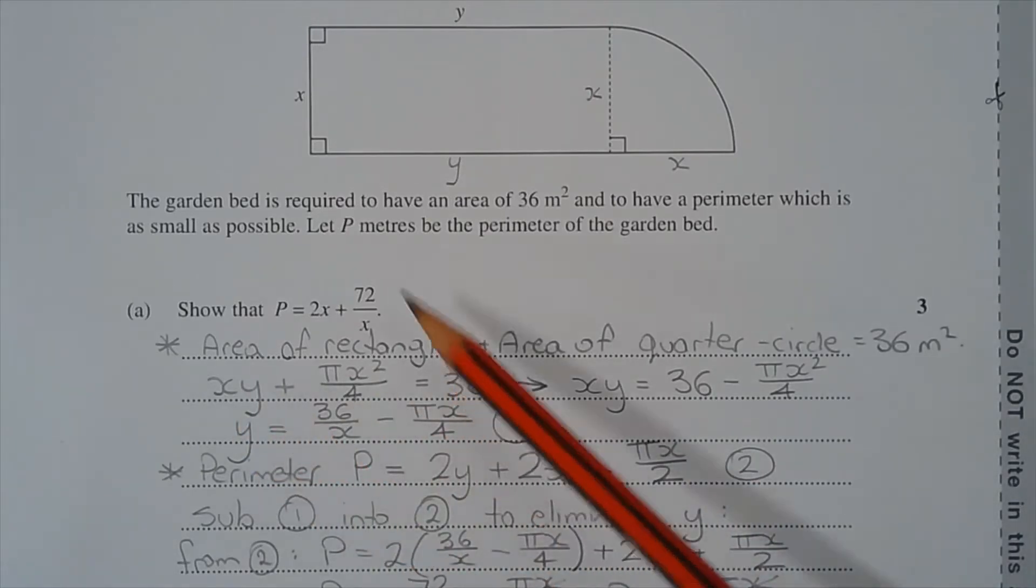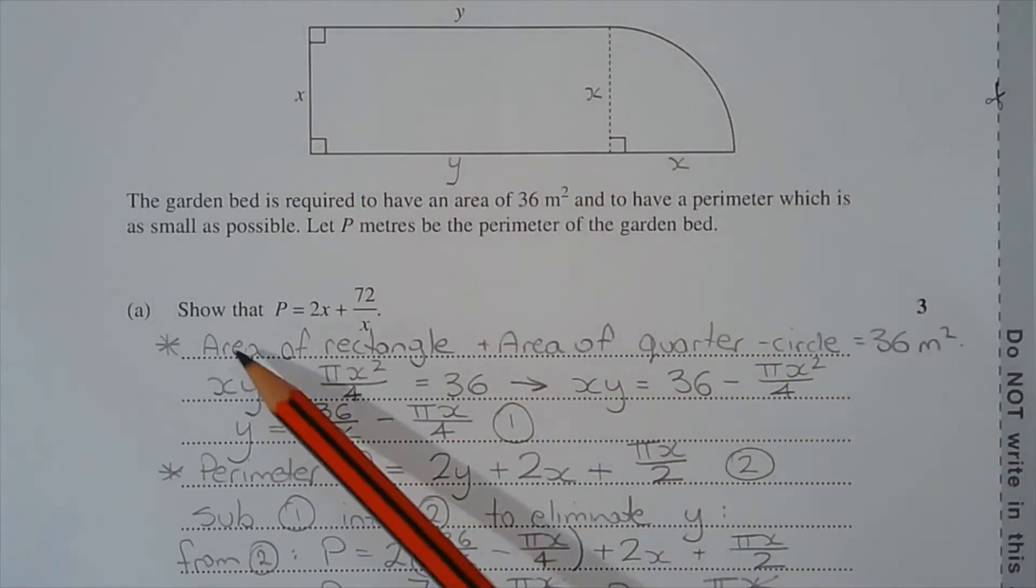Now the area of the rectangle is equal to xy, and the area of the quarter circle is π r² over 4 where r is equal to x meters, which is the radius of this quarter circle.